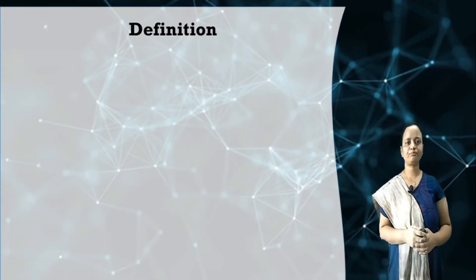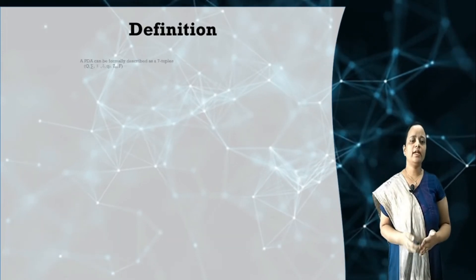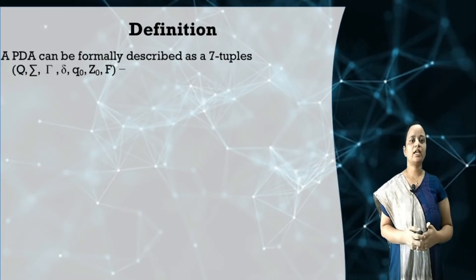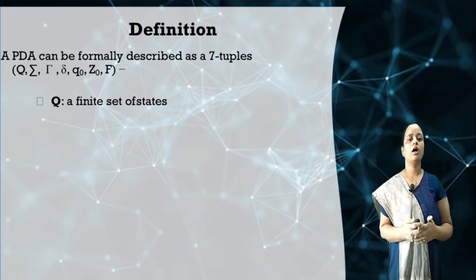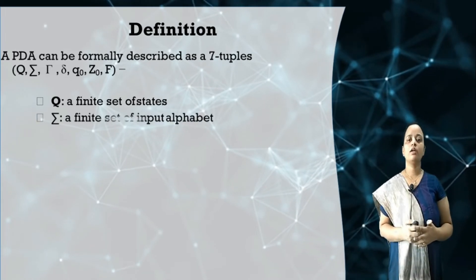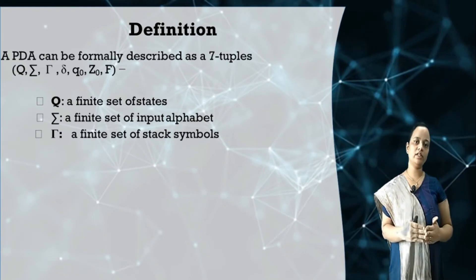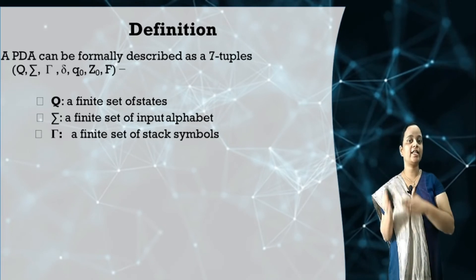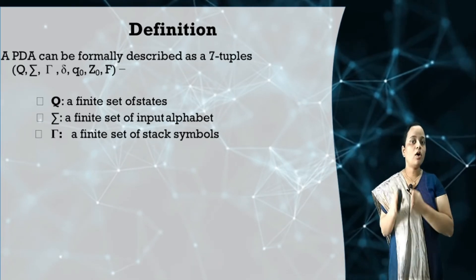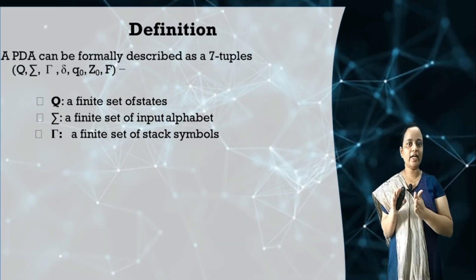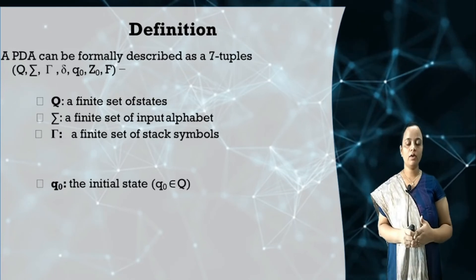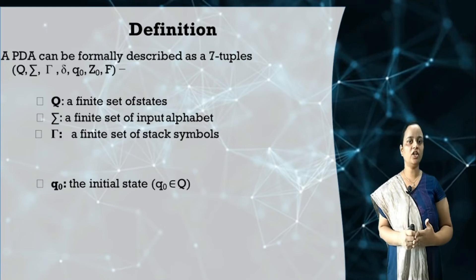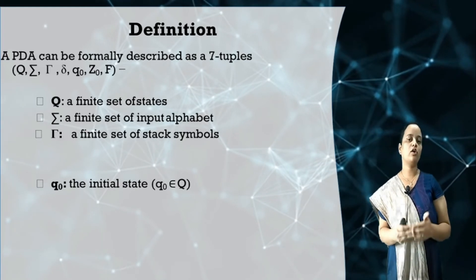A PDA is formally defined by seven tuples: Q, Sigma, Tau, Delta, Q0, Z0, and F. Q is a finite set of states. Sigma is the set of input alphabets. Tau is used in PDA — unlike in finite automata — to define the stack symbols, because here we are using stack memory. The symbols being inserted or removed from the stack are included in the set Tau, called the finite set of stack symbols. Q0 is the initial state, which always belongs to Q.